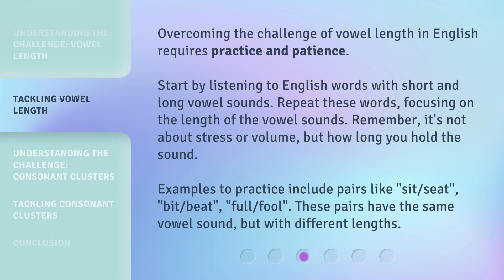Overcoming the challenge of vowel length in English requires practice and patience. Start by listening to English words with short and long vowel sounds. Repeat these words, focusing on the length of the vowel sounds. Remember, it's not about stress or volume, but how long you hold the sound. Examples to practice include pairs like sit/seat, bit/beat, and full/fool. These pairs have the same vowel sound but with different lengths.